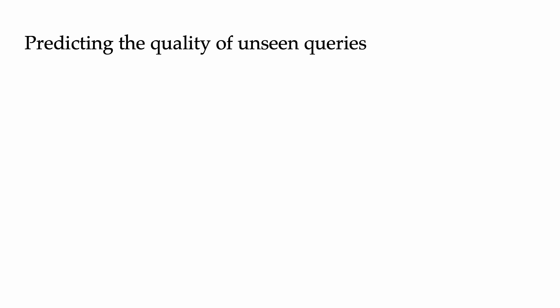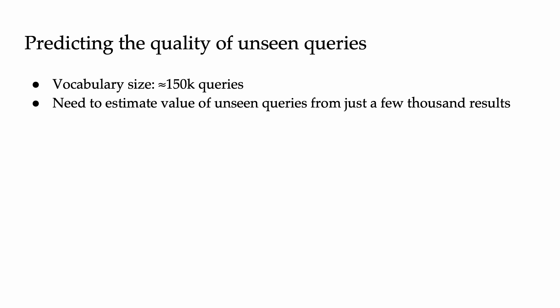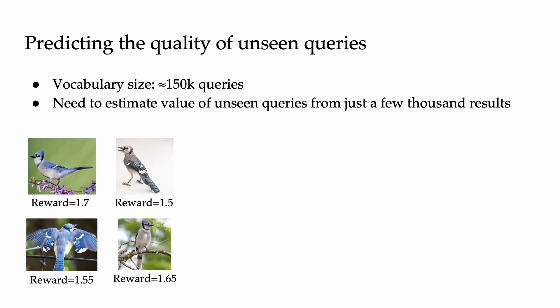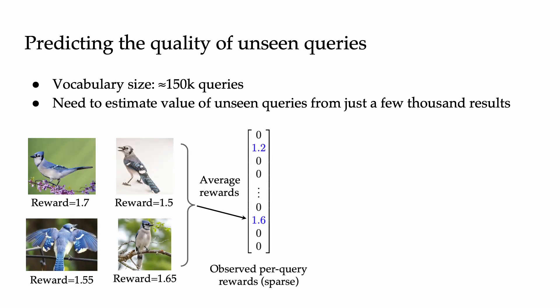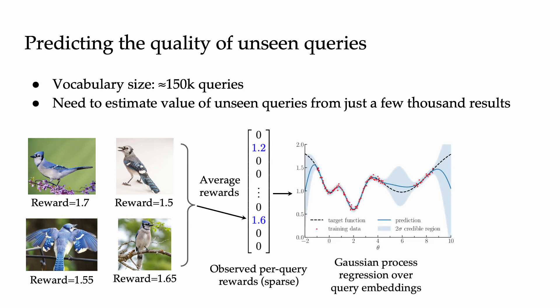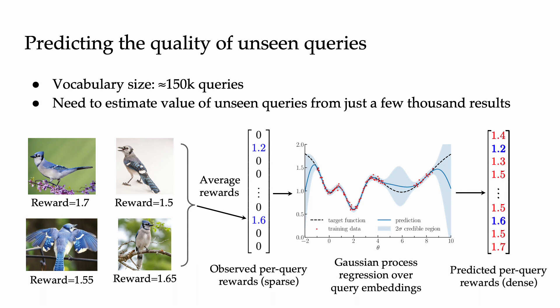The last key component of our method is that we can predict the quality of unseen queries. Our vocabulary has about 150,000 possible concepts, and we need to estimate how good each untried concept is after only seeing results for a few thousand queries. We do this by calculating an image-level reward for each downloaded image, grouping by query, and averaging the per-image rewards to get per-query rewards. Then we fit a Gaussian process regression model to the observed rewards, using pre-trained text embeddings of the queries as features. This lets us estimate the value of untried queries based on semantic similarity to tried queries, and these estimated rewards determine what we search for in the following iteration.